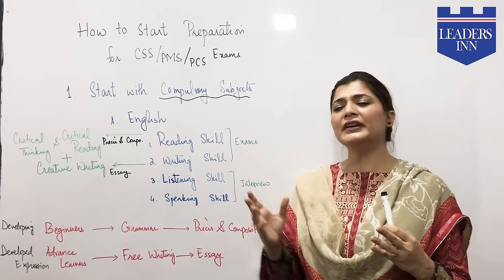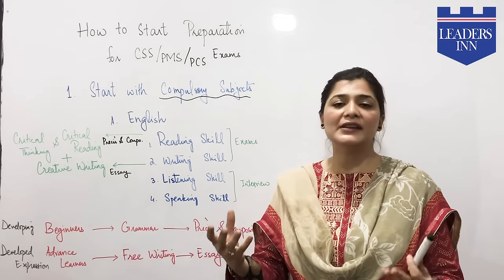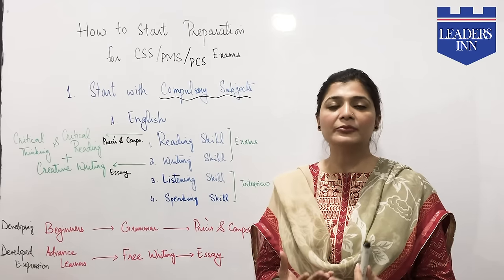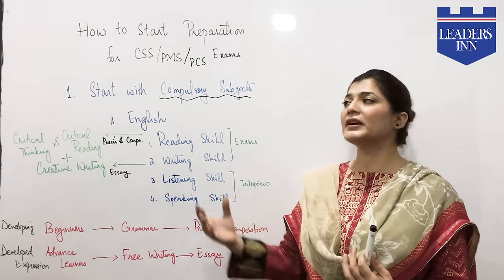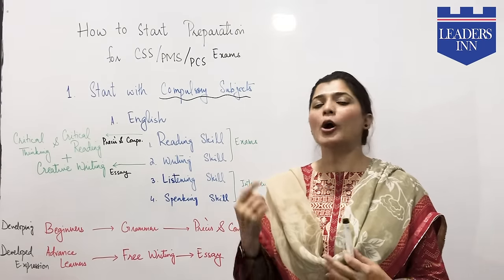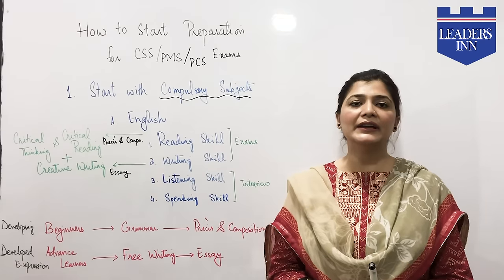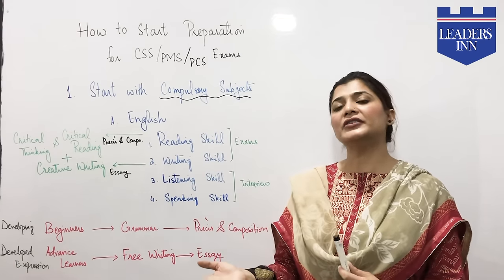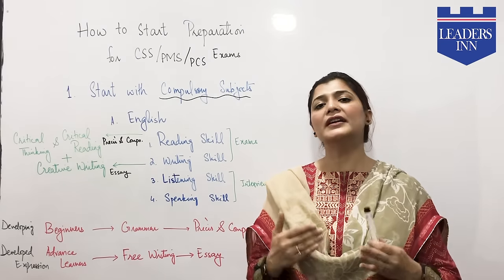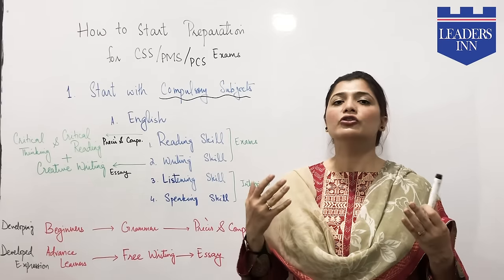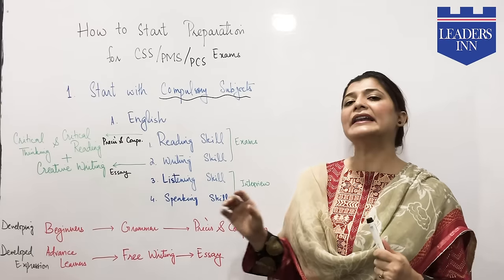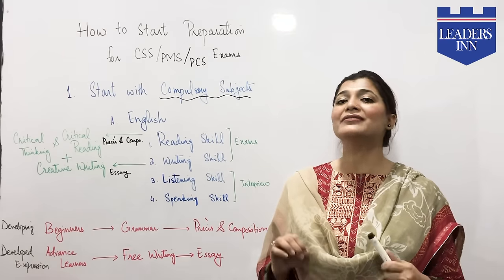Students often say they want to decide their optional subjects first. You need to know which optional subjects you have studied. But the problem is that until you are clear on compulsory subjects, your choice of optional subjects will be affected. Optional selection is best based on your BS background and the scoring trends.